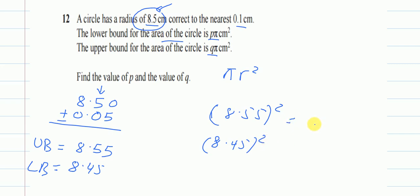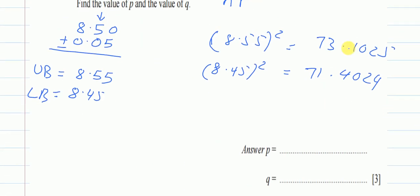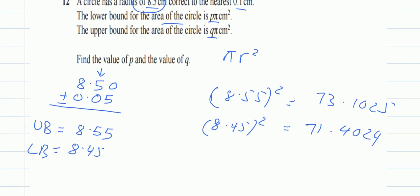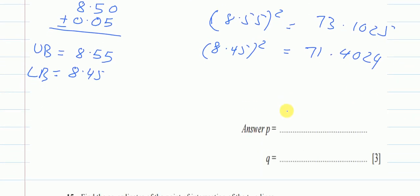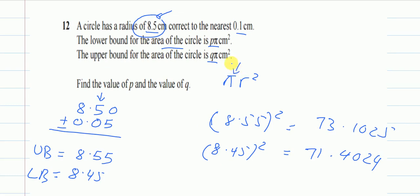And 8.55 squared will give me 73.1025 and for the lower bound 8.45 it will give me 71.4025. So my p is actually this value, p was the lower bound so my lower bound is 71.4025 and it's 73.1025. We do not need to multiply with pi to get the area because it is in terms of pi. So we will leave it as it is and we'll just use this for this question.